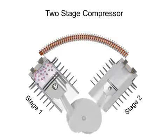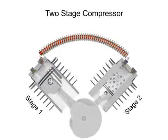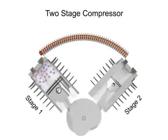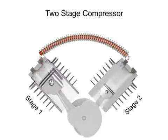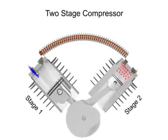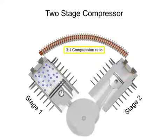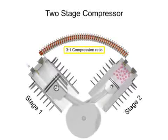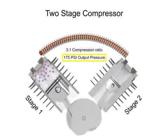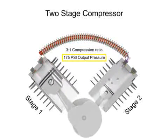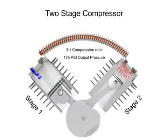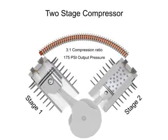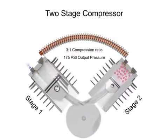The compressed air entering the second stage is sometimes called supercharged air. Two-stage compressors have a compression range of 3 to 1 or even less per stage, but can operate up to 175 PSI. They can also deliver more air at a higher pressure than single-stage compressors of the same horsepower.